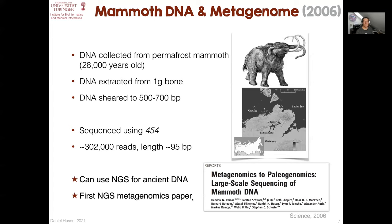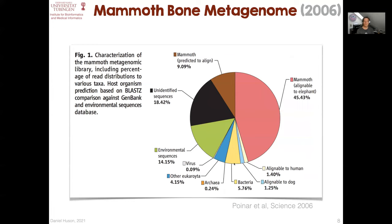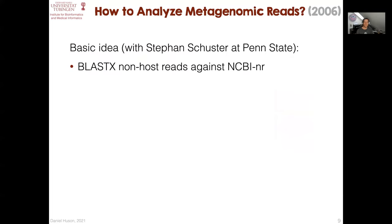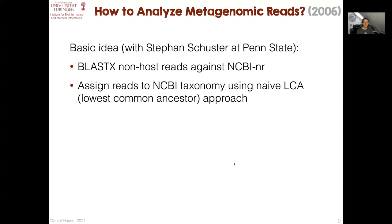This paper contained the first metagenomic analysis based on second-generation sequencing — a very high-level mapping of sequences to different types of organisms. The basic idea born in that paper was to use BLASTX alignment of non-host reads against the NR database, the database of non-redundant protein sequences, and then to use the naive LCA algorithm to assign each read to a taxon based on its protein alignments.